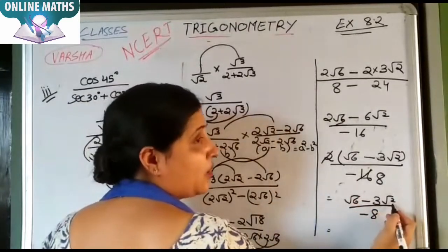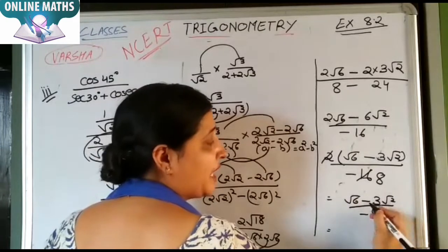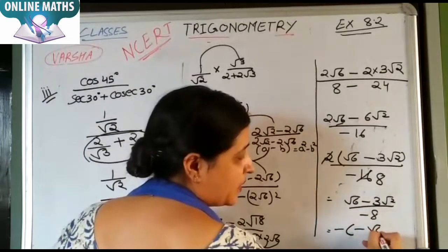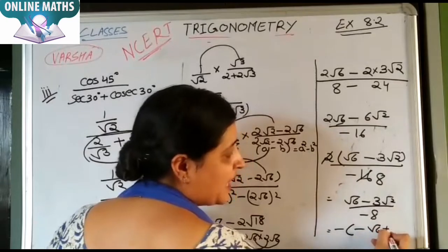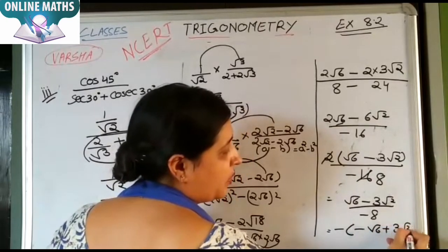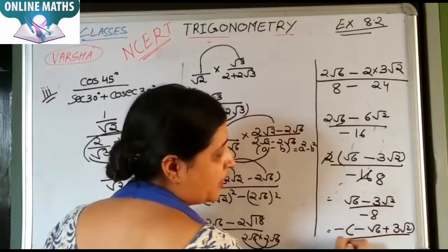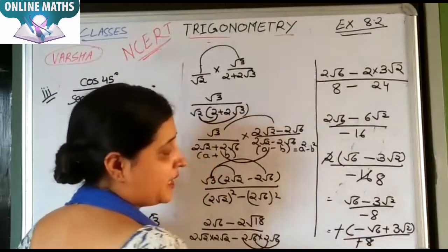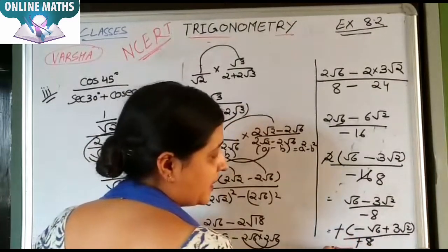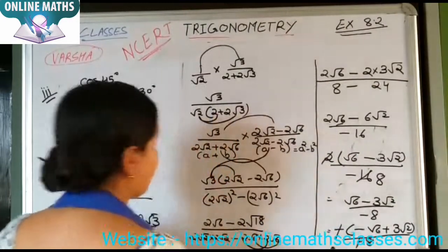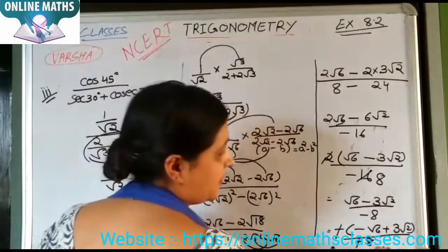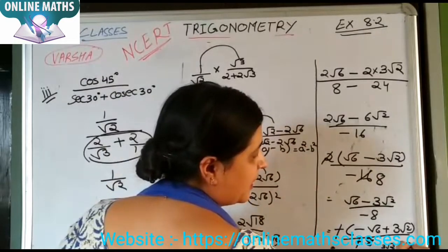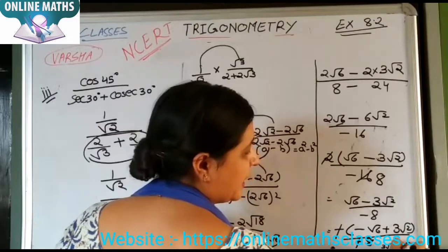Cancelling the negatives, the final answer is 3 under root 2 minus under root 6 upon 8.